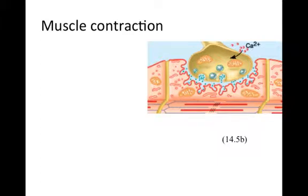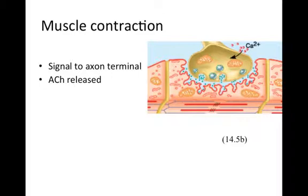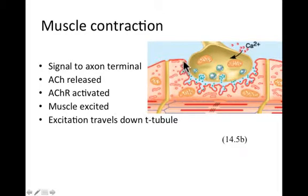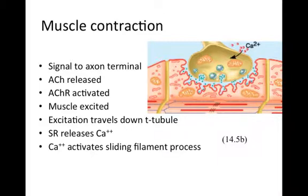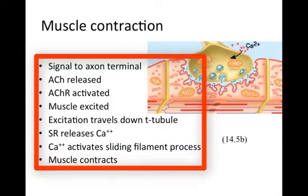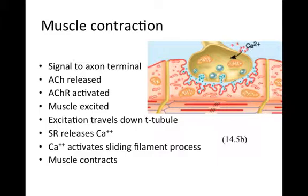Here are the steps of a muscle contraction in more detail. At the neuromuscular junction, the signal from the neuron reaches the axon terminal and acetylcholine is released. Acetylcholine receptors on the sarcolemma are activated and the muscle cell enters an excited state. That excitation travels along the sarcolemma and deep into the muscle fiber by way of the t-tubules. The stimulus reaches the sarcoplasmic reticulum, which releases calcium. The calcium then activates the sliding filament process and the muscle contracts. Practice describing these steps using diagrams and labeling them.